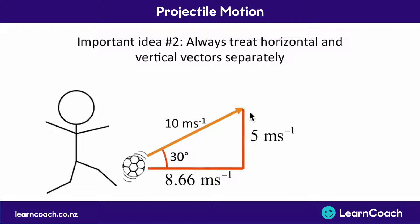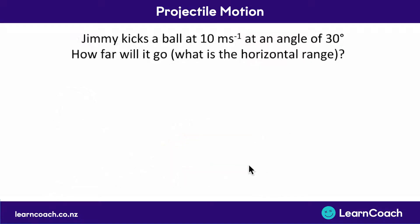We've now calculated the vertical and horizontal components of the velocity separately, which is an essential first step in almost all problems. So the 10 meters per second at 30 degrees is made up of a vertical part of 5 meters per second and a horizontal part of 8.66 meters per second. A question might ask: Jimmy kicks a ball at 10 meters per second at 30 degrees — how far will it go horizontally?